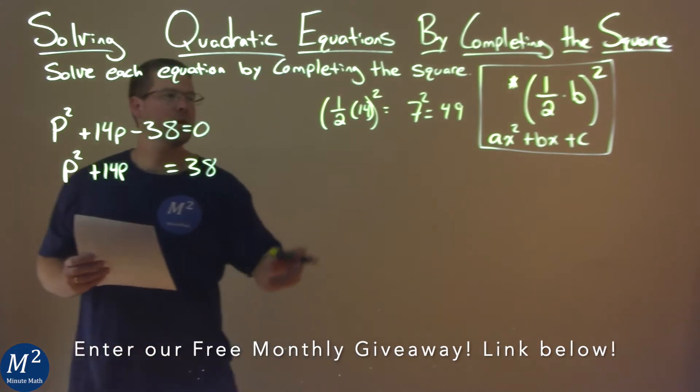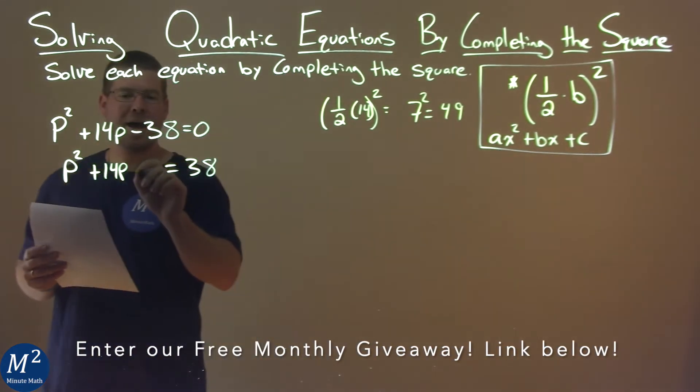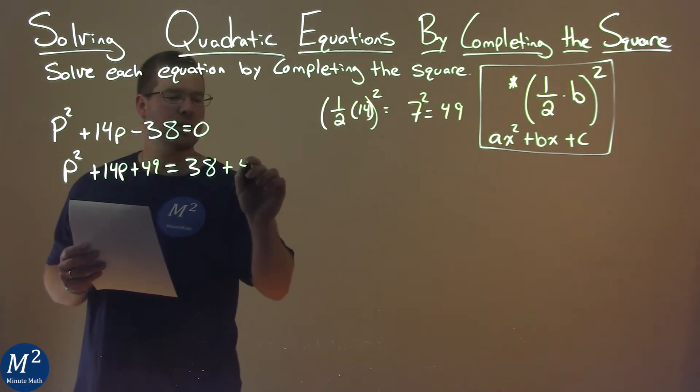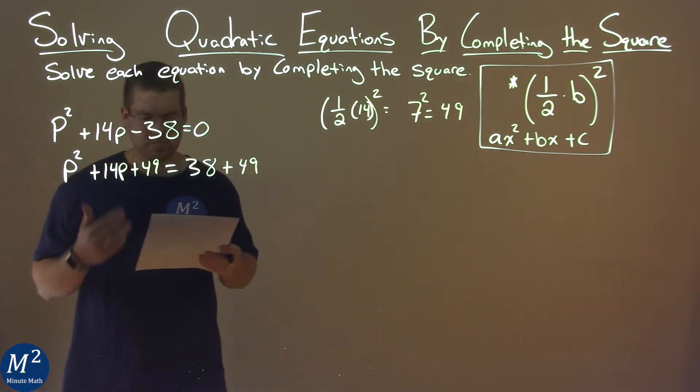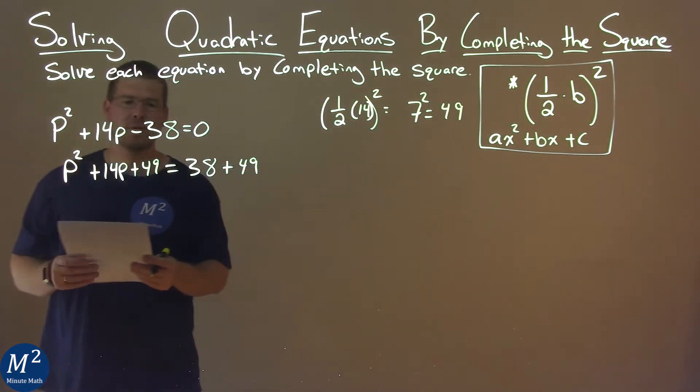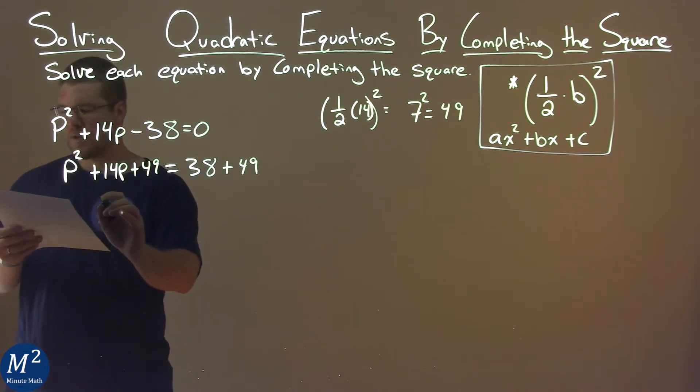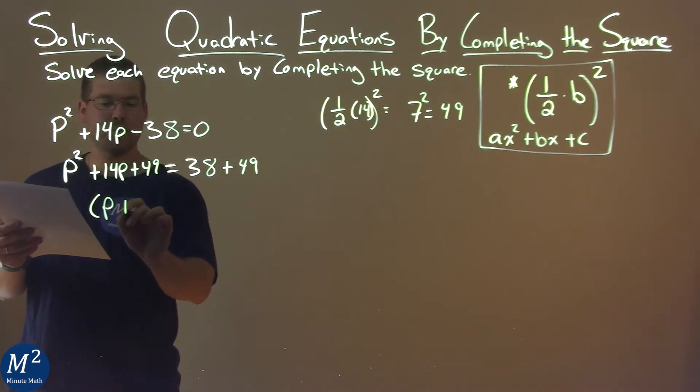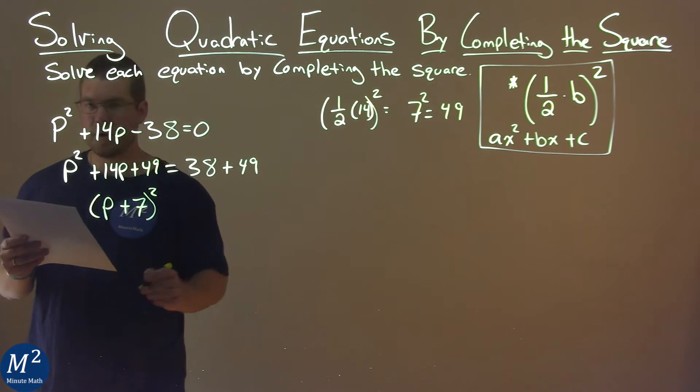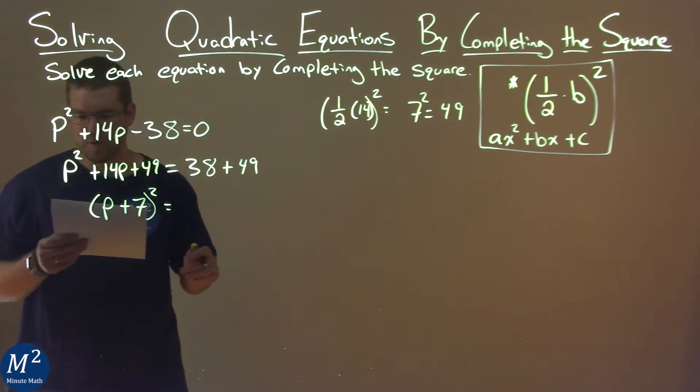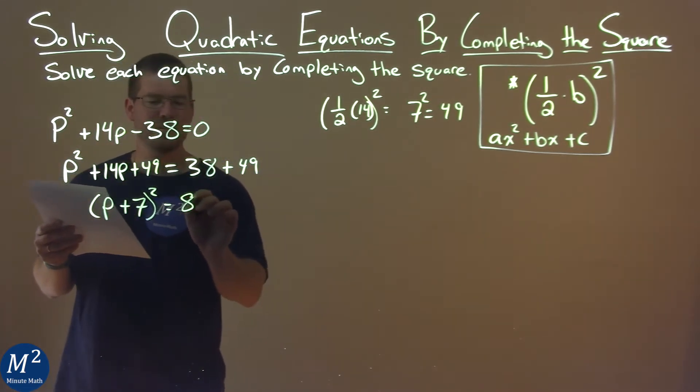So now what we want to do is take that 49, and we're going to add it to both sides of the equation. And what does this make for us? The left-hand side now becomes a perfect square. P plus 7 squared, and that's equal to 38 plus 49 being 87.